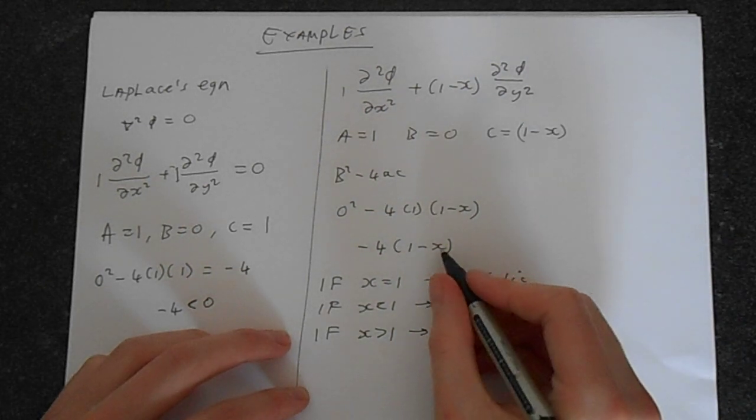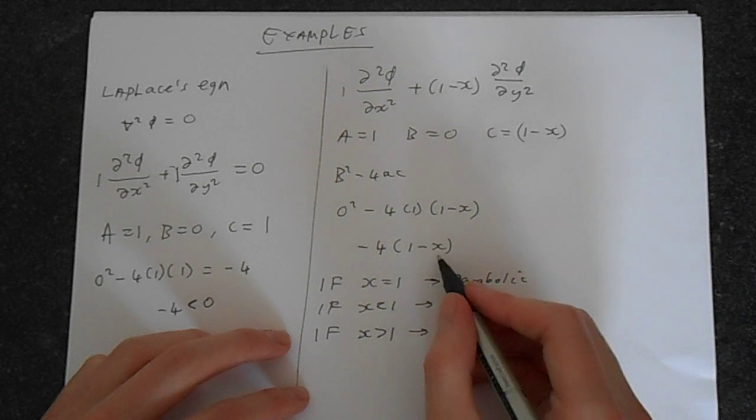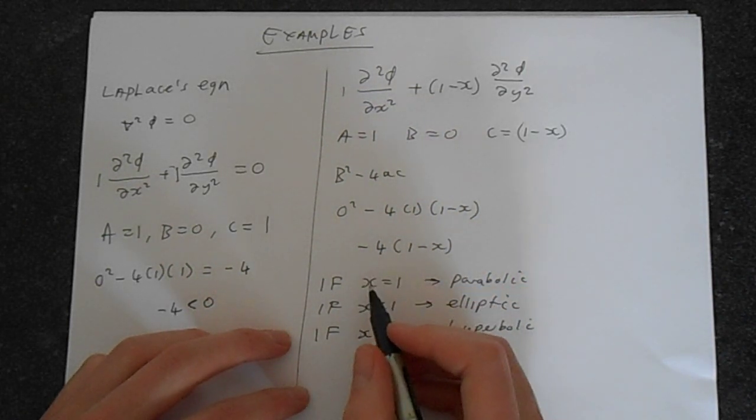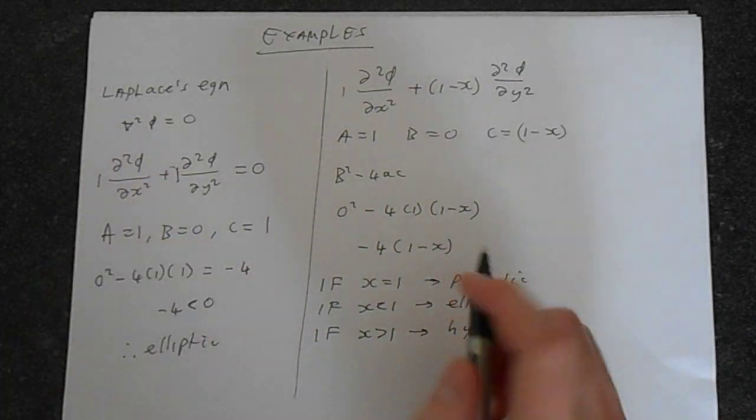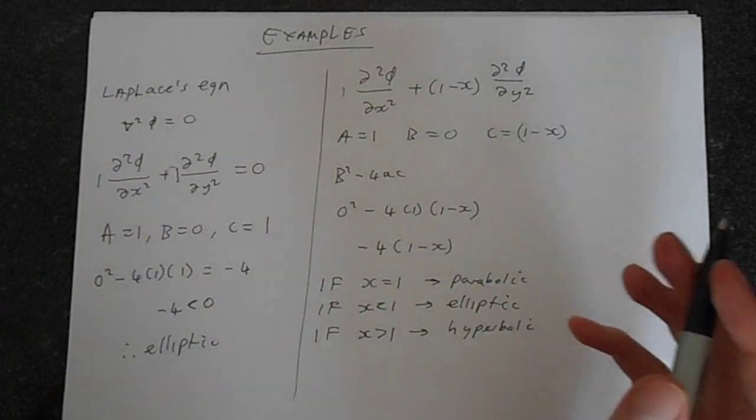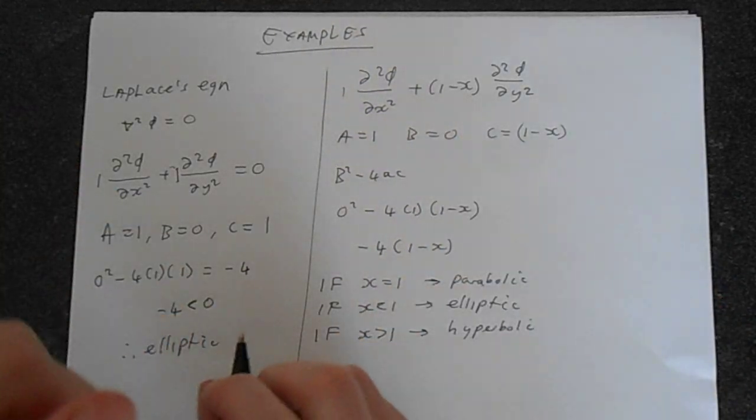Because if this is, say, 2, 1 minus 2, well, that's going to make that negative. And if this is negative, that's going to become positive. So we're going to have a hyperbolic. So in this case, this PDE is all three, potentially, depending on the value of x.